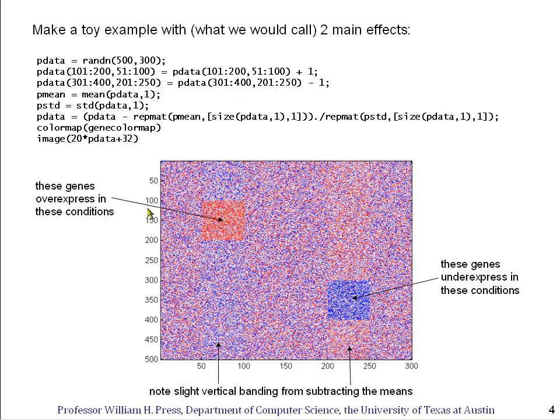Now, of course, here, where the effects are in consecutive bins, both in genes and in experiment numbers, it's easy to just see these effects by eye. But if you imagine randomly shuffling both of these axes, you'd see that these effects would simply be lost in the noise.